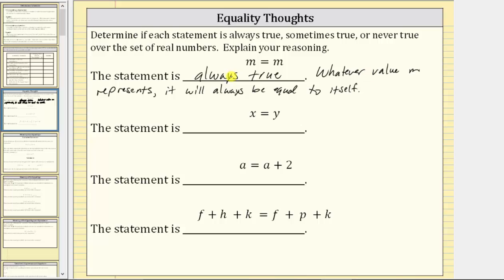Next, we are given the statement or equation x equals y. At first this may appear as if this is never true, but remember the variables x and y represent changing values, so it is possible for them to represent the same value. As an example, x could equal two, and so could y, and if that was true, the statement would be true. But if x and y represent different values, this would be false.